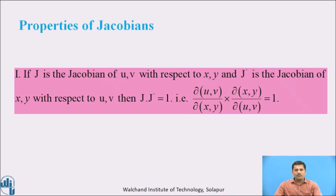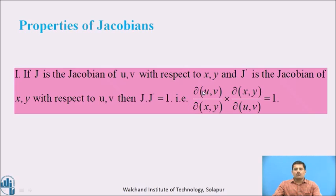Now let us consider the properties of the Jacobian. The first property is: if J is the Jacobian of uv with respect to xy, and J' is the Jacobian of xy with respect to uv, then J into J' is equal to 1. That is, Jacobian of uv with respect to xy multiplied by Jacobian of xy with respect to uv equals 1.